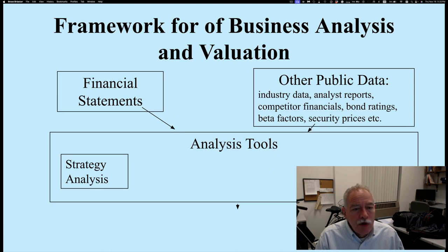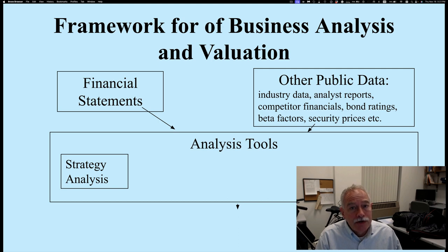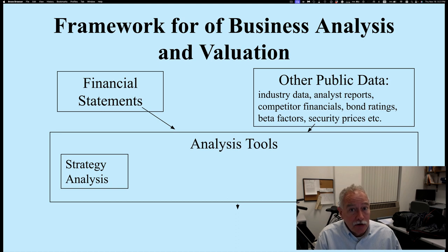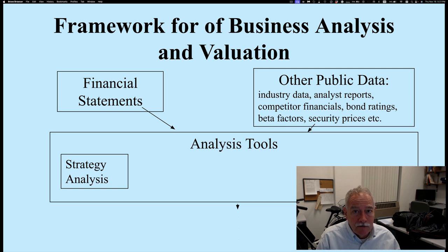What we do is take advantage of all available financial information — financial statements and other public data. Scour the web: industry data, analyst reports, competitor financial statements, bond ratings, beta factors. Beta measures how much a particular stock changes relative to the overall market. For example, if the overall market goes up 1%, a stock with a beta of 2 would go up 2%, essentially magnifying the effect of market increases and decreases in security prices.